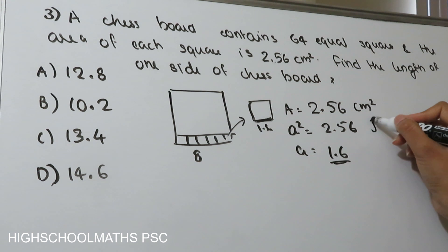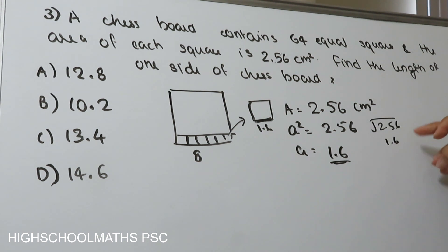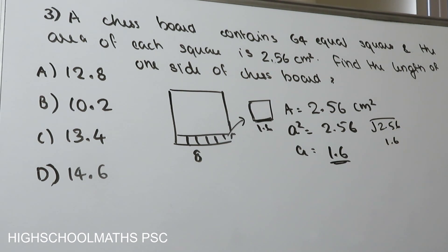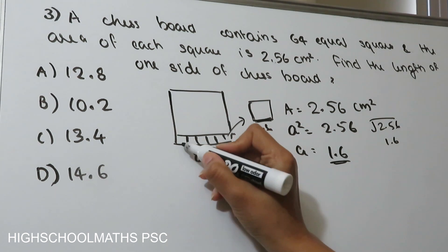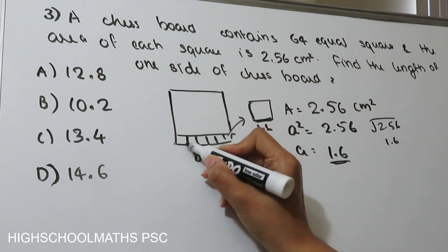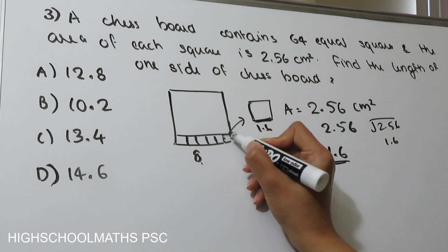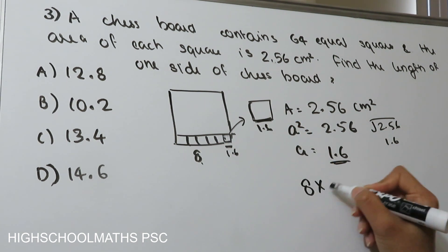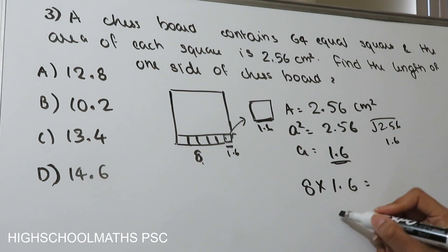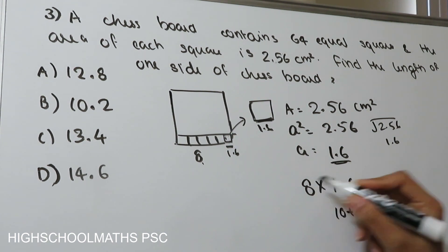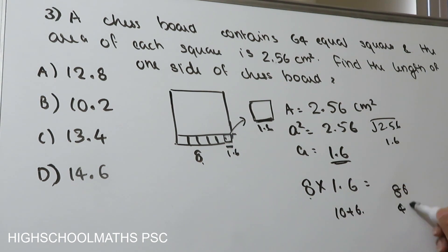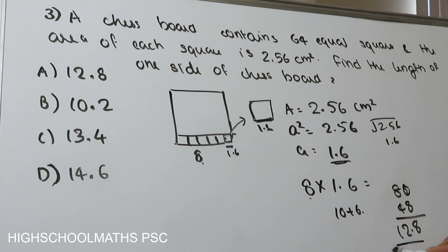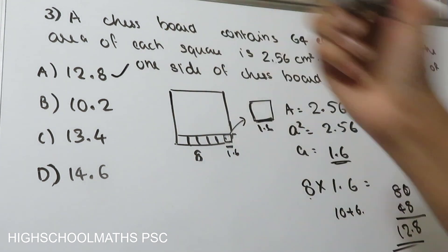So the side length of each small square is 1.6 cm. The total length of the chessboard is 8 × 1.6 = 12.8 cm.